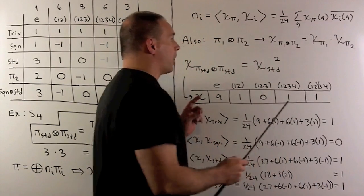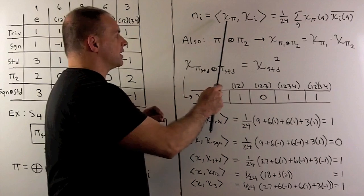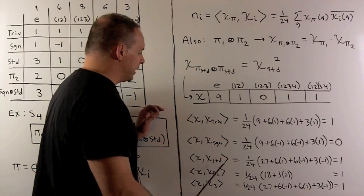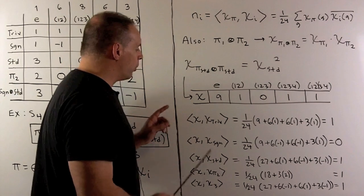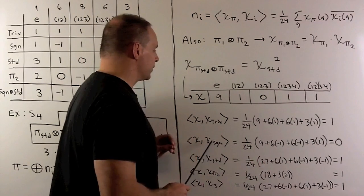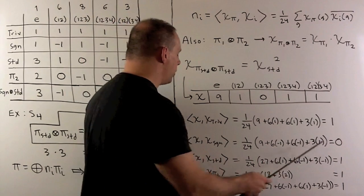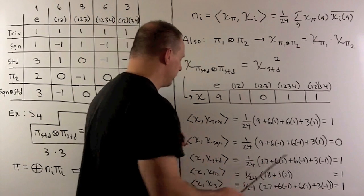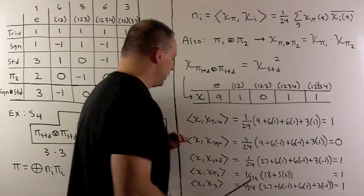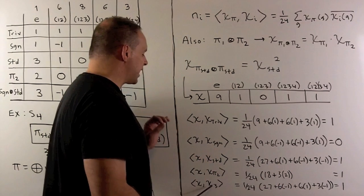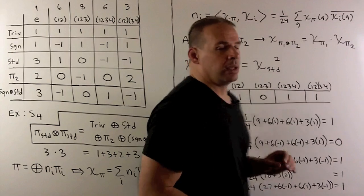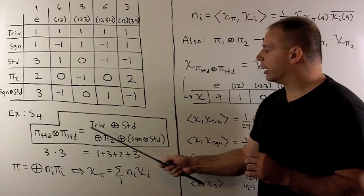Applying the recipe for multiplicities, we work out five inner products. For the trivial, we get multiplicity 1. For the sign, we get 0. For the standard, we get 1. For the two-dimensional representation, we get 1. And for sign tensored with standard, we get 1. This confirms the decomposition: standard ⊗ standard ≅ trivial ⊕ standard ⊕ two-dimensional ⊕ (sign ⊗ standard).